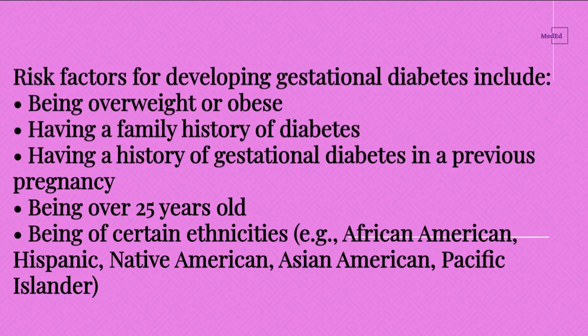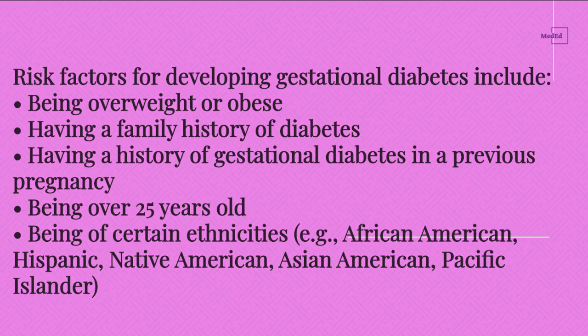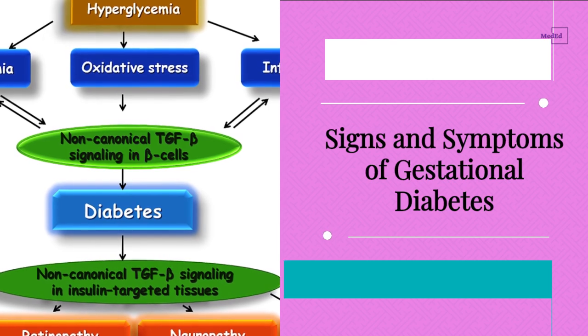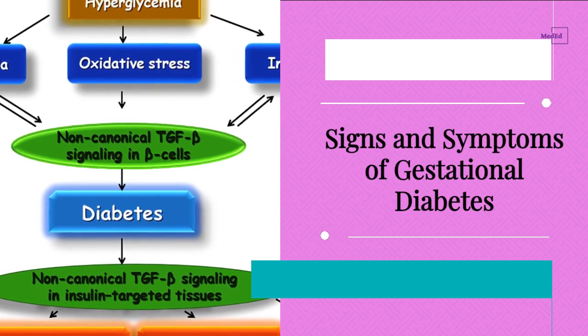Risk factors for developing gestational diabetes include: being overweight or obese, having a family history of diabetes, having a history of gestational diabetes in a previous pregnancy, being over 25 years old, and being of certain ethnicities — for example, African American, Hispanic, Native American, Asian American, and Pacific Islander.